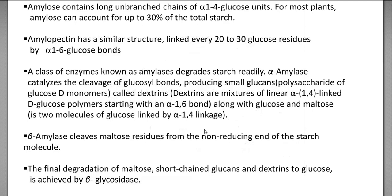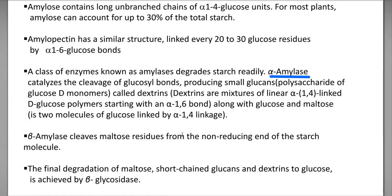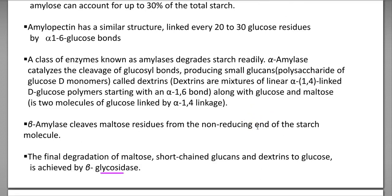The enzymes involved in starch degradation are collectively referred to as amylases. These include alpha-amylases, which catalyze the cleavage of glucosyl bonds, producing a molecule called dextrin that can be further degraded by other enzymes. Beta-amylase cleaves maltose residues from the non-reducing end of the starch molecule, and the final degradation of starch can be accomplished by the beta-glucosidase enzyme.